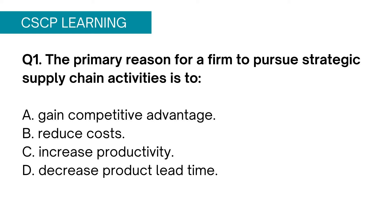Option C, increase in productivity. When productivity is increased, you gain a competitive edge. Option D, decrease in product lead time — decrease in product lead time will reduce time to market your product, which means you will capture market share faster than your competitor, which is again a competitive edge. So all of these options are correct, but Option A summarizes the other 3 options. Therefore Option A is the most appropriate answer.